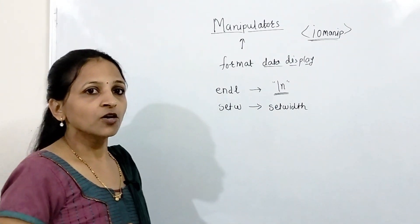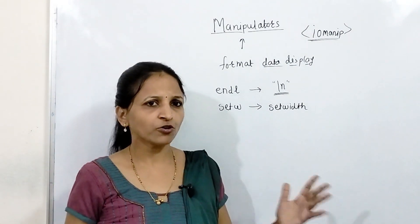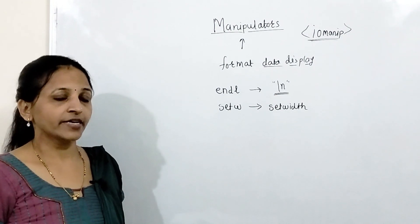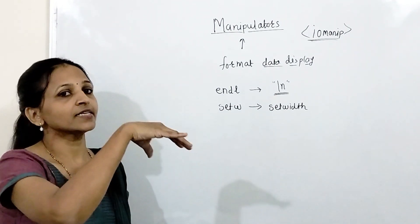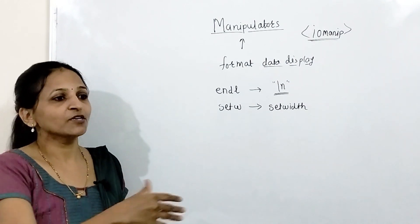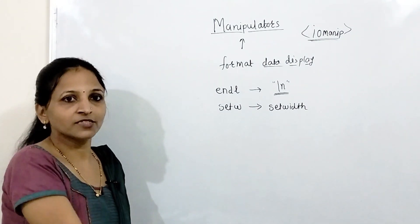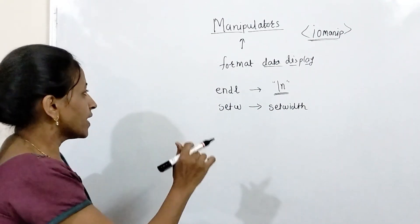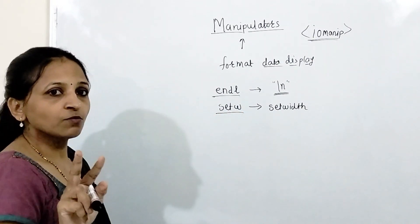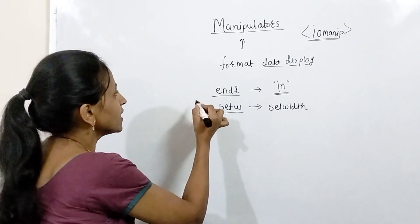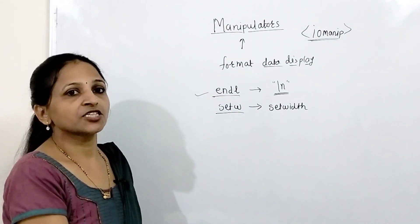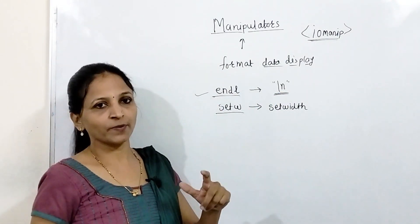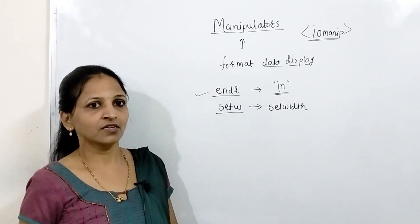In a C++ program, if we want to display anything onto the output screen, we use the cout statement, and that's why we use these manipulators inside the cout statement. Now, the endl manipulator and setw manipulator are the most commonly used. The endl is just like a newline — if you want to put a newline character anywhere, instead of that you can use the endl manipulator.